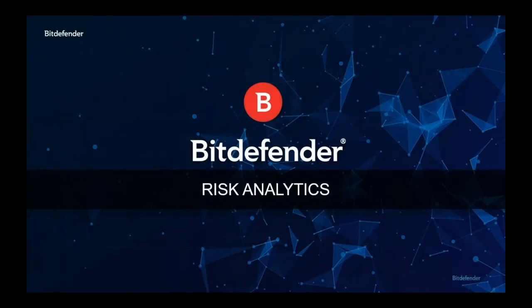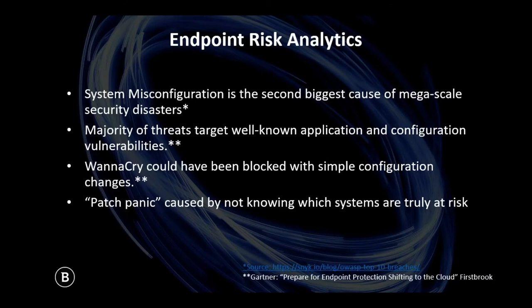Moving into risk analytics — this is our core new feature within hardening that I want to focus on. Risk analytics is essentially going to solve the issue of system misconfiguration vulnerabilities. System misconfigurations are the second biggest cause of mega-scale security disasters. WannaCry, for example, took advantage of an SMB misconfiguration within the SMB protocol, and had that misconfiguration been properly set on the endpoints, WannaCry would not have been able to execute.